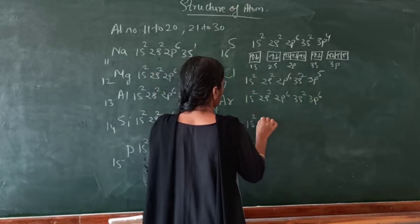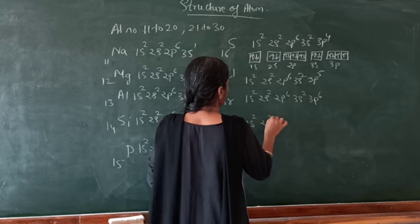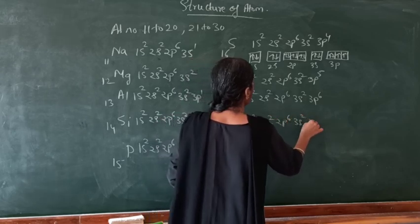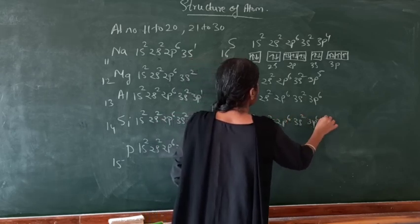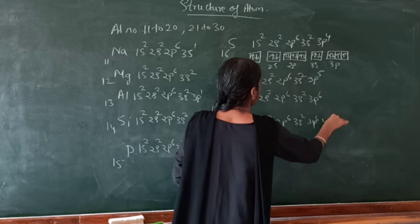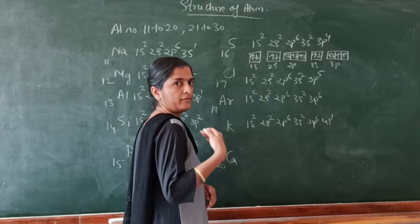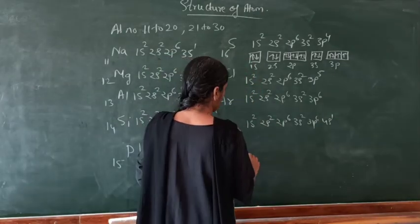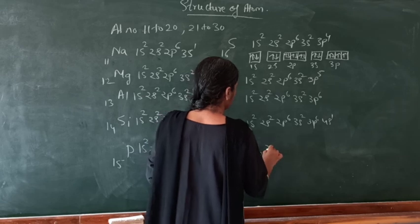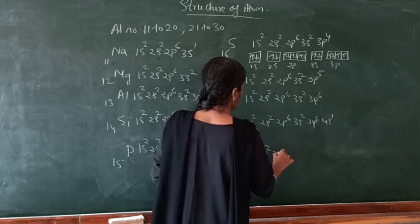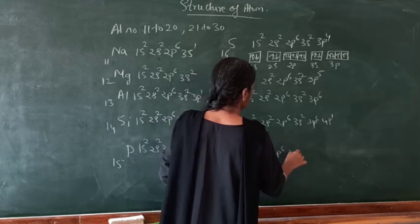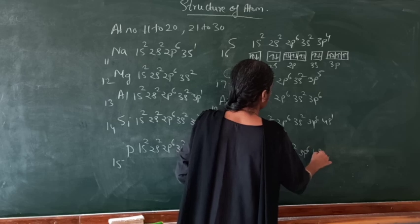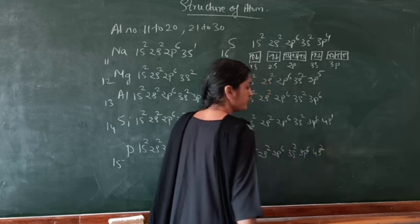Next, potassium: 1s², 2s², 2p⁶, 3s², 3p⁶, 4s¹. After 3p, it is 4s. Next, calcium: 1s², 2s², 2p⁶, 3s², 3p⁶, 4s². This is the electronic configuration of elements up to atomic number 20.